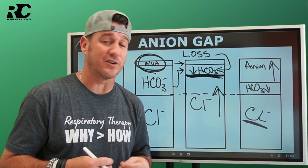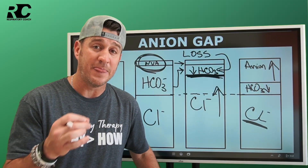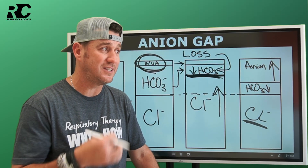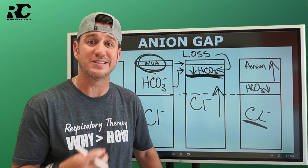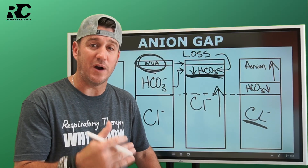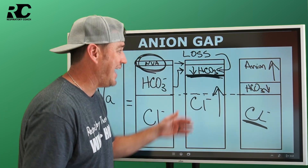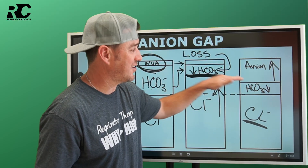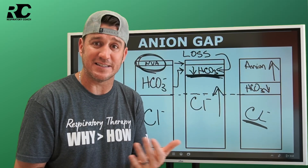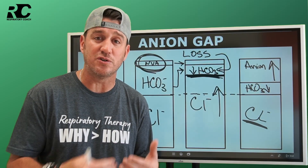When you have diabetic ketoacidosis or lactic acidosis with an elevated anion gap, the answer is not simply to give bicarb. Giving bicarb is not the end-game solution. For DKA, you need to give insulin. For lactic acidosis due to tissue hypoxia, you need to improve perfusion and increase tissue oxygenation — because lactic acid is a byproduct of tissue hypoxia from anaerobic metabolism. You can give bicarb all day, but if you don't fix the tissue hypoxia or the DKA, lactic acid will keep building up.